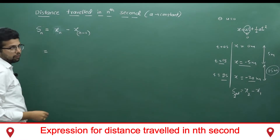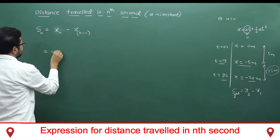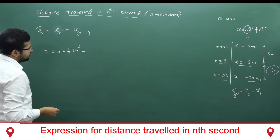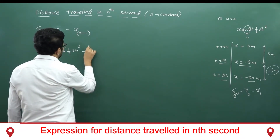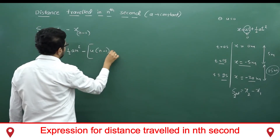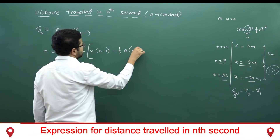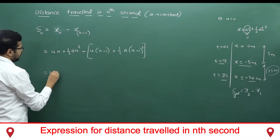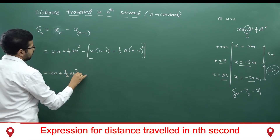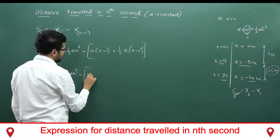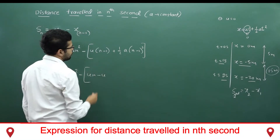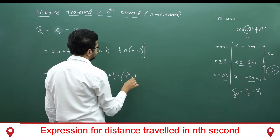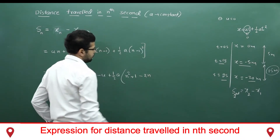Now we do the simplification. What is x_n? It is un + ½an². What is x_(n-1)? It is u(n-1) + ½a(n-1)², where (n-1)² expands as n² - 2n + 1.